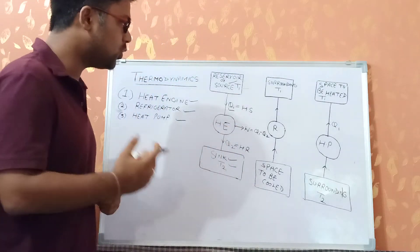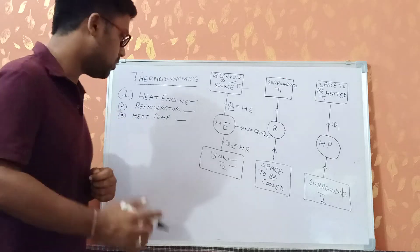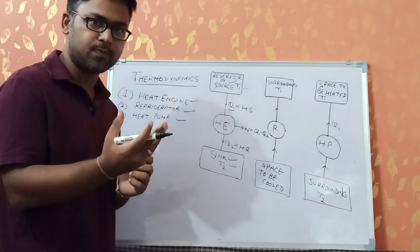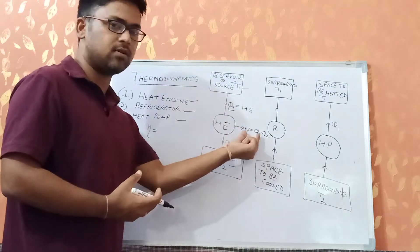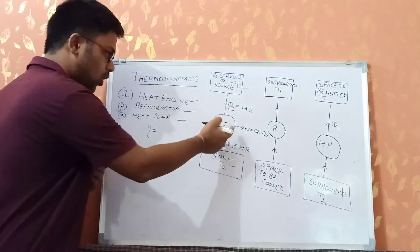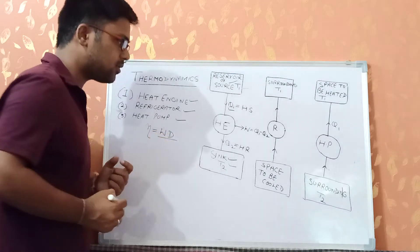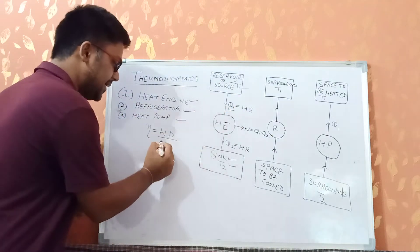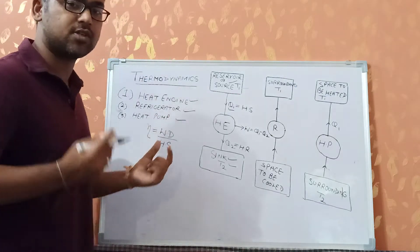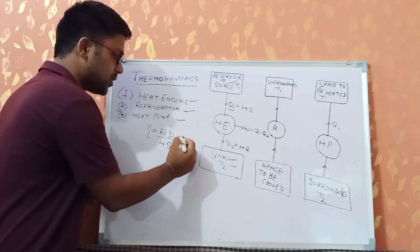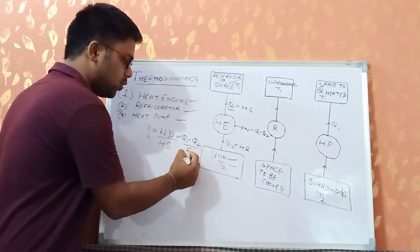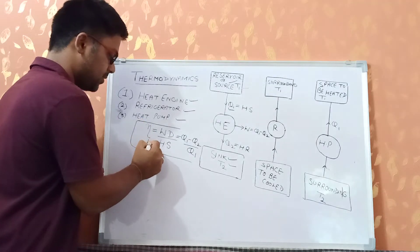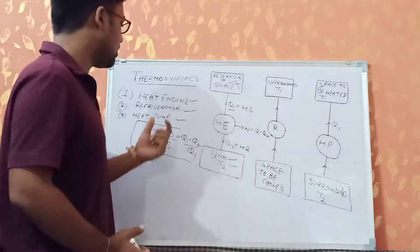Now we find the efficiency of the heat engine. Efficiency is defined as the ratio of output to input. The output is the work done by the heat engine, and the input is the heat supplied Q1. So efficiency equals work done upon heat supplied, which can be written as Q1 minus Q2 upon Q1. This represents the efficiency of the heat engine.